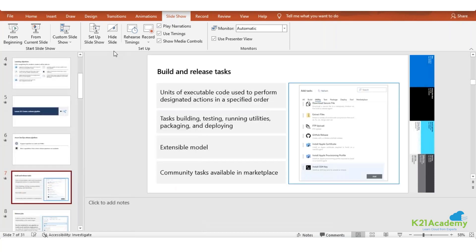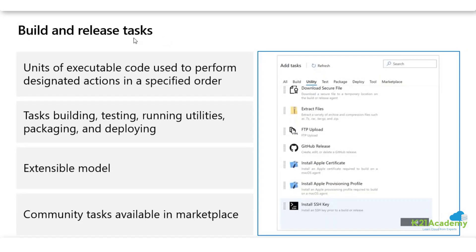Azure DevOps release pipeline can be created in both forms. When adding a particular task, it gives you a list of options where you can bring your requirements - maybe any particular packages, utility test deployment tools, or marketplace options. Just like you have a third-party database requirement, you can also select from the marketplace. Tasks are the unit of executable code used to perform a designated action in a specific order, and the order is important for building, testing, and running your utilities.